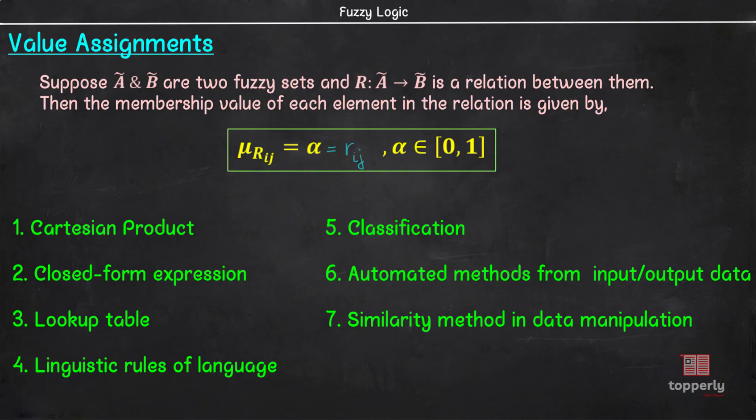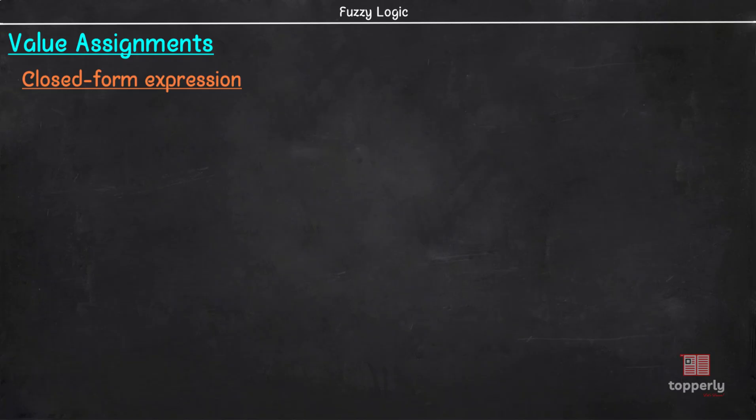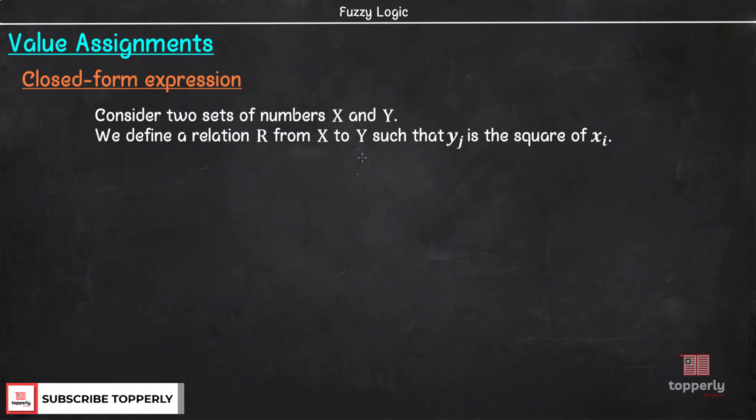Now, in the second method, closed form expression, membership value Rij can be found through simple observation of a physical process. For example, consider two sets of numbers X and Y. Suppose we define a relation R from set X to set Y such that yj is the square of xi, where yj and xi are members of the set Y and X respectively.